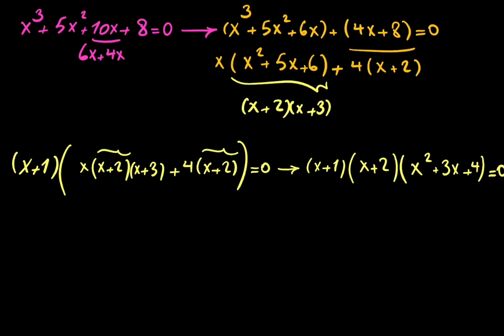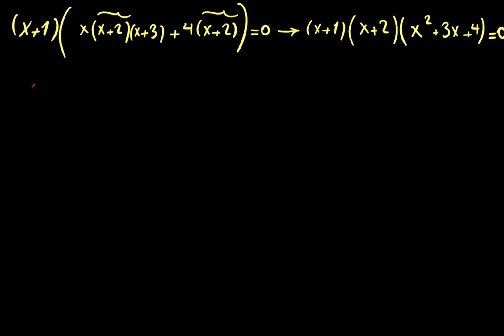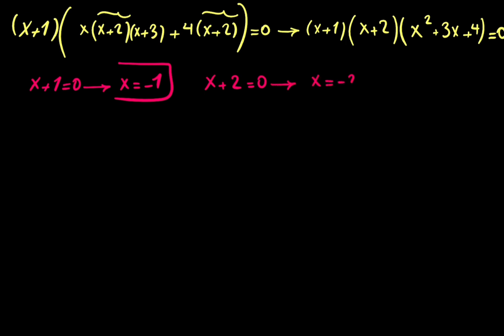So our full factored equation is (x+1)(x+2)(x² + 3x + 4) = 0. This gives us three cases. The first: x + 1 = 0, so x = −1. The second: x + 2 = 0, so x = −2.